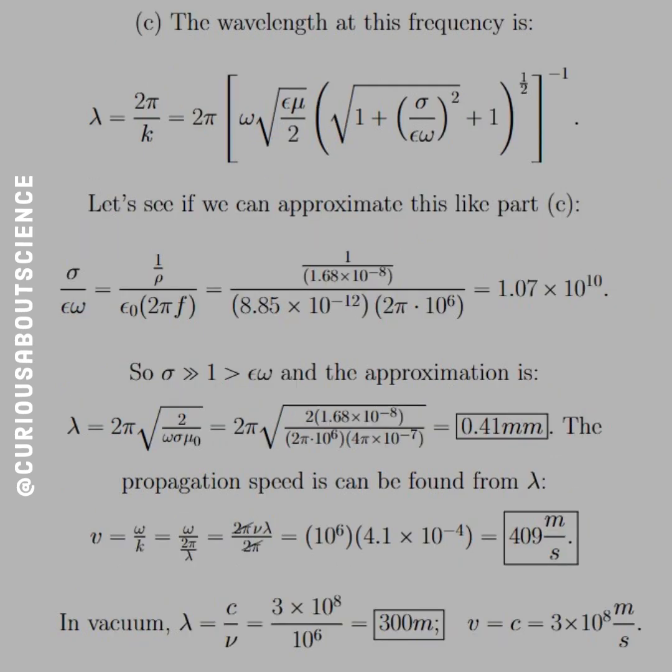Similarly, the wavelength at this frequency is lambda equals 2 pi over k, where k is equal to this nasty fraction once again. And we'll just approximate it like we did in part B. We see that sigma is much greater than epsilon omega and 1. So the approximation runs to 2 pi square root of 2 over omega sigma mu_0. Plug it all in again, where omega equals 1 over rho resistivity, which is found in the table of Chapter 7.